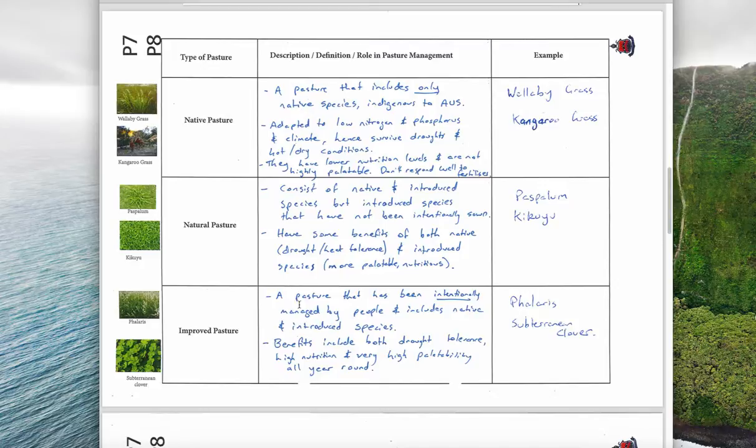Lastly, for improved pastures, this is a pasture that's been intentionally managed by people and includes native and introduced species. You have the benefit of both - being better drought tolerance but also high nutrition and very palatable all year round. That can be well managed by people because they can choose exactly which species go in there.